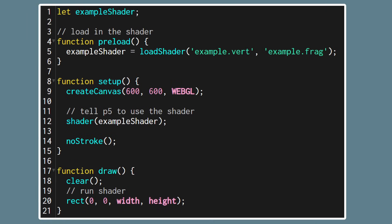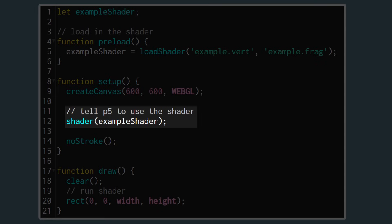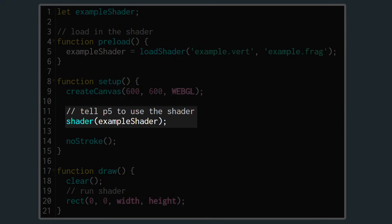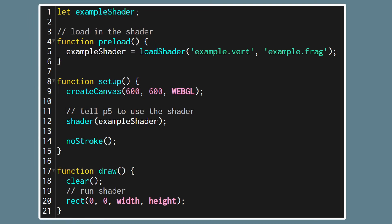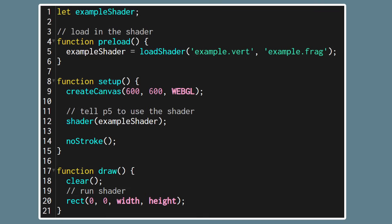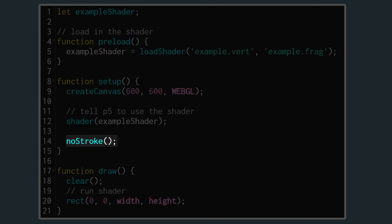We want to load our shader before we start running our sketch so in the preload function we can call loadShader. We'll store the shader object that's returned in a global variable called example shader. We've now loaded the shader into p5 but we need to tell p5 to actually use it — to do this in the setup function we can call the shader function and pass in our shader object. Now everything we draw on the screen will be using our shader. We also call noStroke to turn off shape outlines and clear in the draw function to wipe the screen each frame.